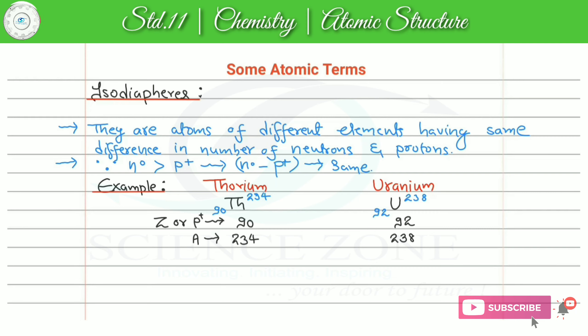अब हमें neutron minus proton check करना है, तो उसके लिए सबसे पहले हमें neutron find out करना पड़ेगा। Neutron means atomic mass minus atomic number. तो thorium की case में number of neutrons: 234 minus 90 which is 144. And for uranium it is 238 minus 92, it will be 146.